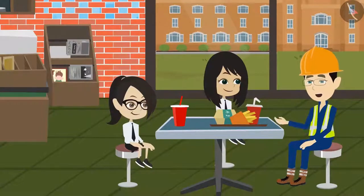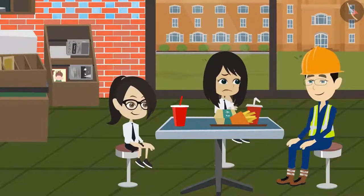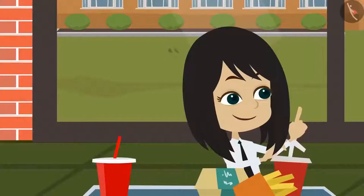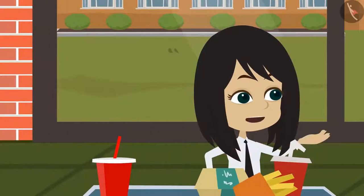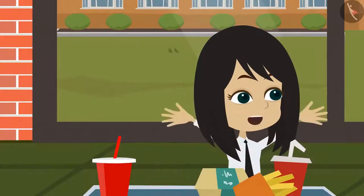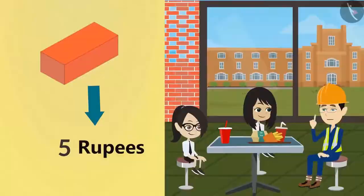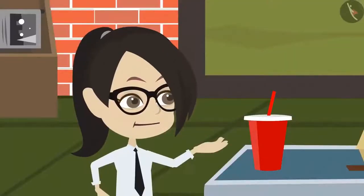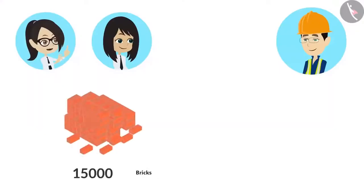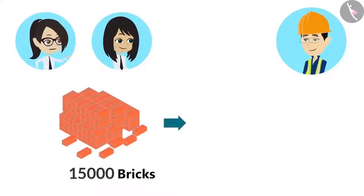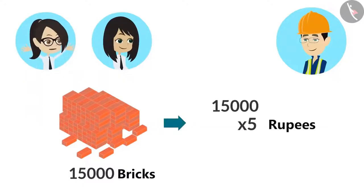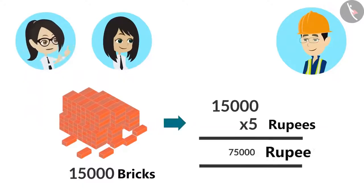So tell me, how much did the bricks cost for the construction of this entire canteen? Sir, you have not told us the cost of one brick. If you tell us that, we will be able to calculate the total cost. The cost of one brick is Rs. 5. If one brick costs Rs. 5, then 15,000 bricks will cost 15,000 multiplied by 5, which is 75,000.